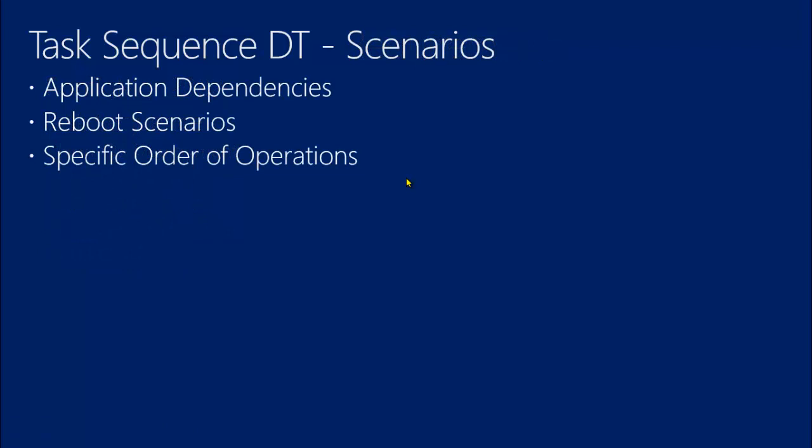What are some scenarios for the task sequence deployment type? There are so many I could list — I just listed a few. Application dependencies: if you have a complex application deployment where you need to make sure certain dependencies are in place with a very specific order of operations, there's no better option than a task sequence. If you need to handle multiple reboots or even a single reboot to get the job done, there's no better option than a task sequence.